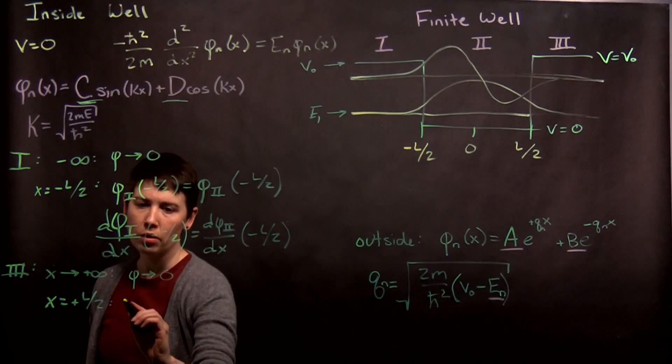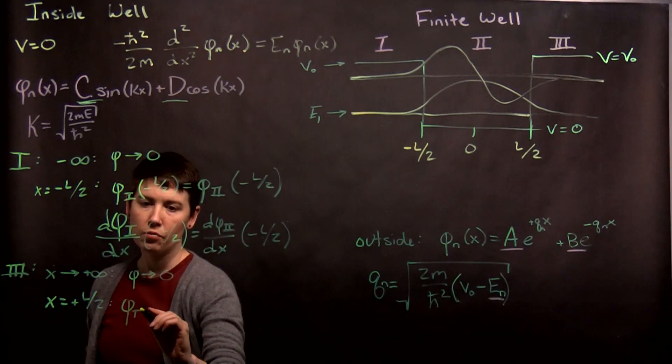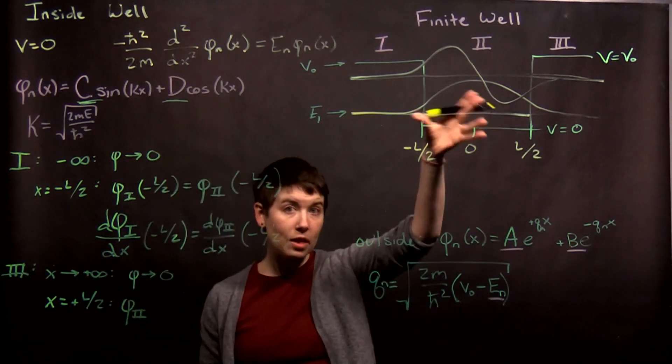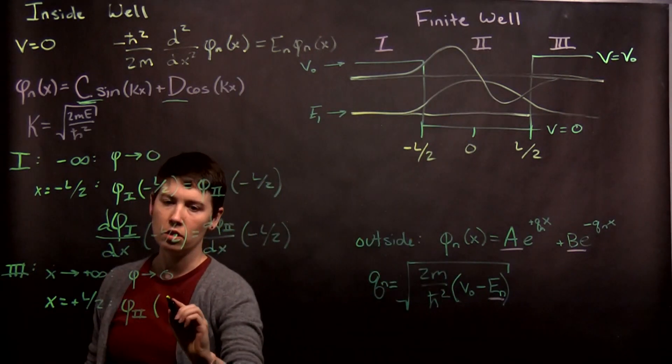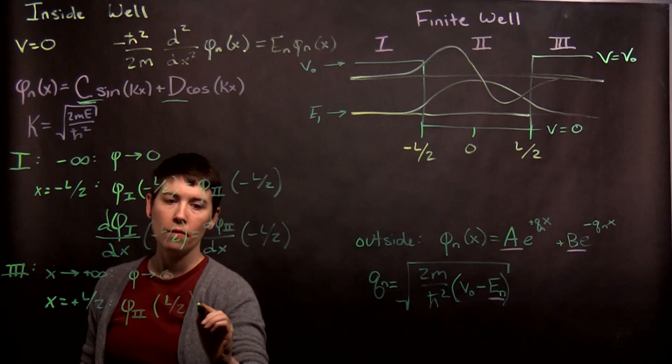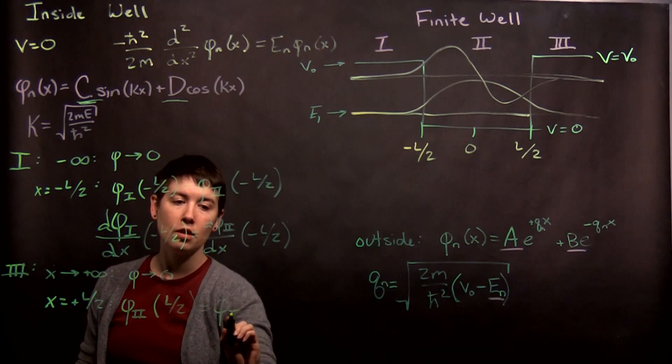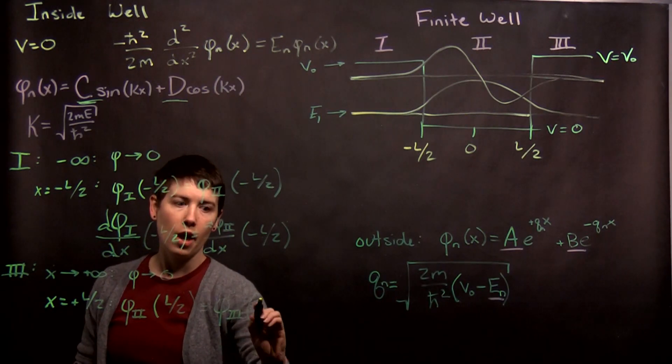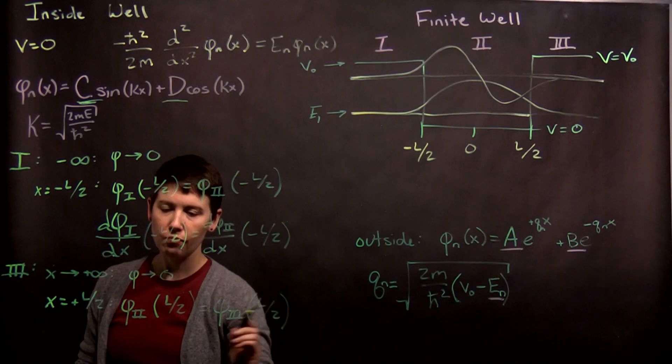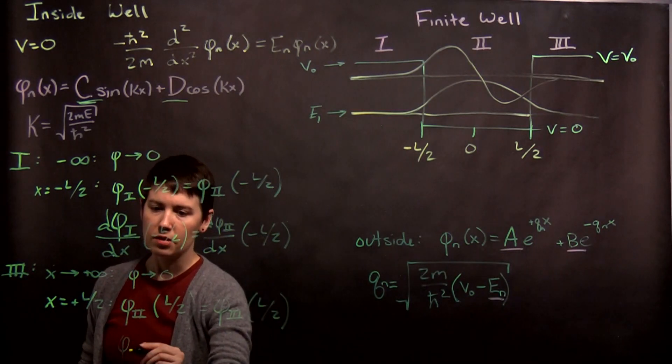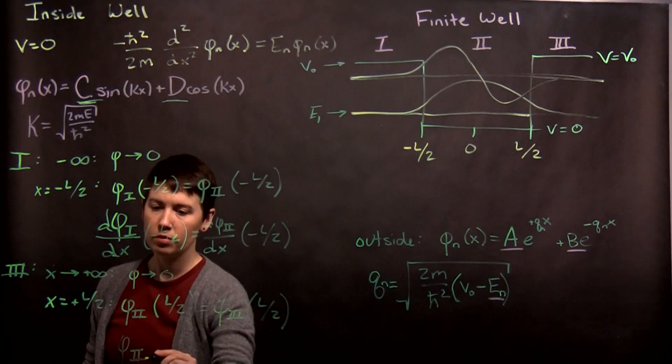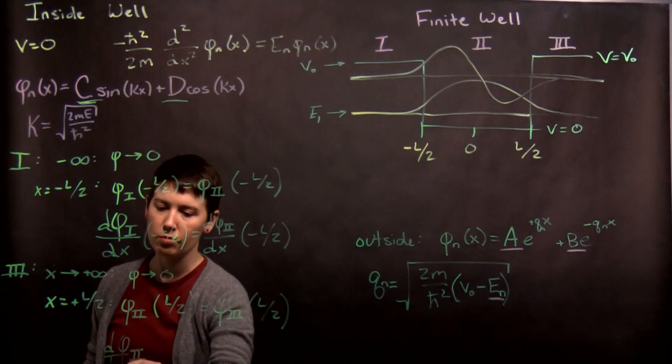But again, we now have phi two. So, phi two is again that inside the well wave function at positive l over two must equal what's happening in phi three at positive l over two. And again, the derivative also has to be continuous with respect to x.